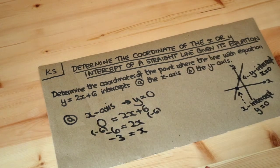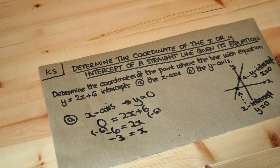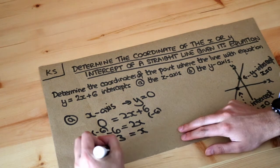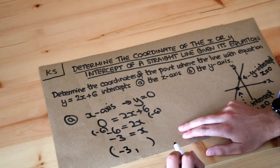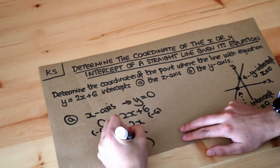So we know therefore it cuts the x axis when x is minus 3. If we turn that into a coordinate, well the x value is minus 3 and the y value we said was zero.